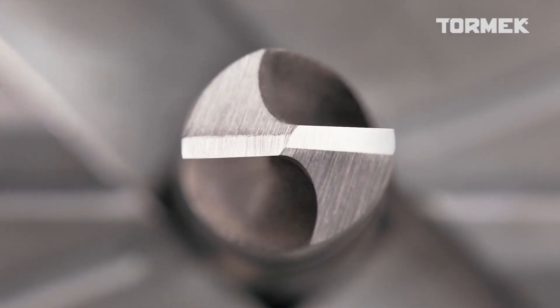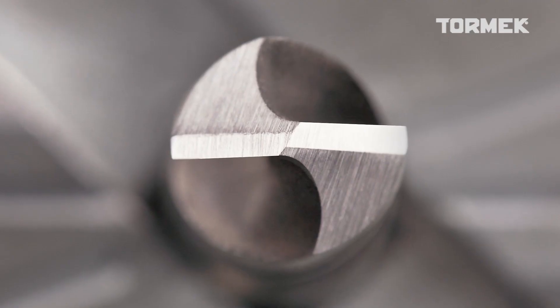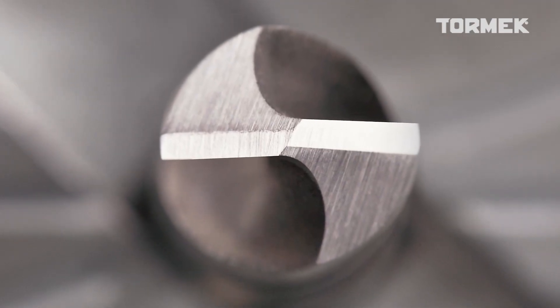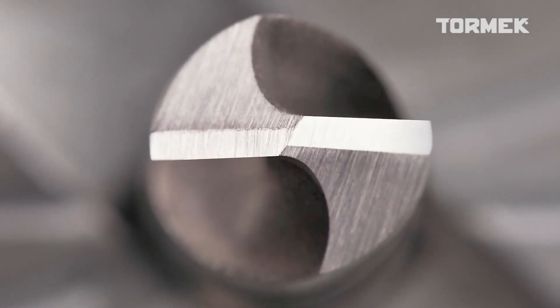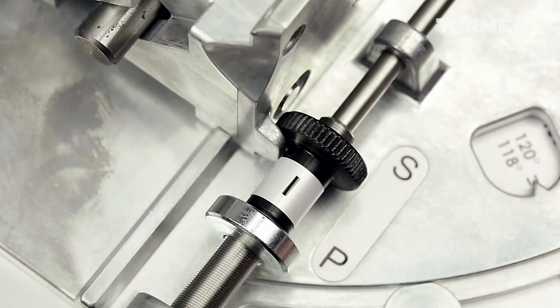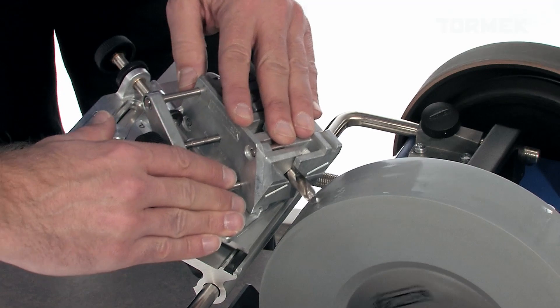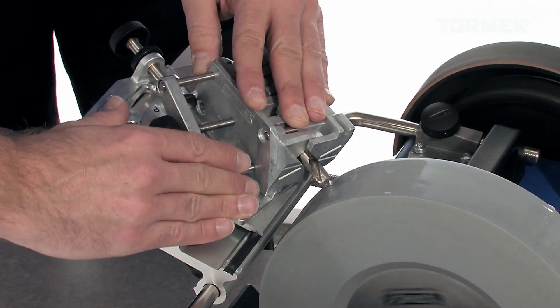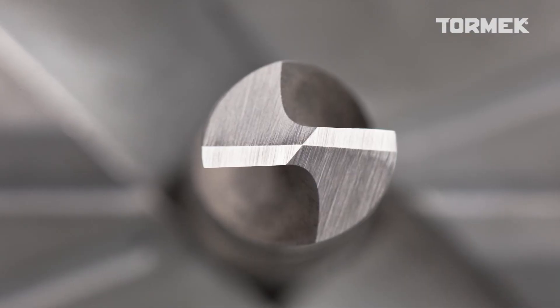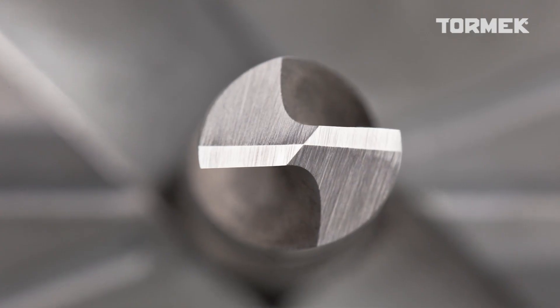Check the grinding. In this case the secondary facets need to be sharpened more in order to meet in the center and create a point. Feed another quarter of a turn. Now we have a perfect four faceted point.